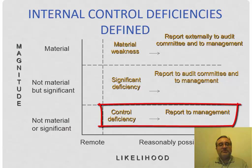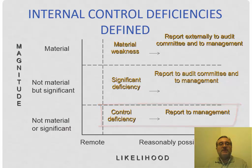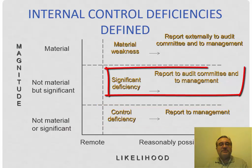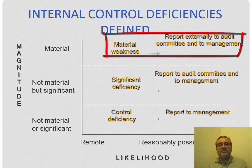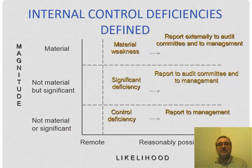From a reporting perspective: control deficiencies are reported to management; significant deficiencies are reported to the audit committee and to management; and material weaknesses are reported to external users and become part of the opinion letter. Only material weaknesses identified in the audit of internal controls over financial reporting appear in the auditor's opinion.